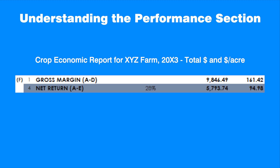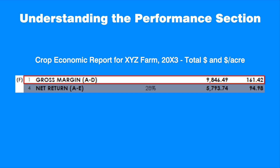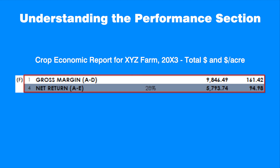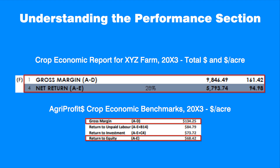Let's look at the resulting crop economic efficiency measures. This field provides a gross margin of $161.42 per acre return once all cash costs are paid. This amount is available to cover depreciation costs, principal payments and owners withdrawals. The net return of $94.98 is the profit remaining after payment of all costs and can be used for future investments and owners withdrawals. Knowing the gross margin and net return information, the farm manager can use this to evaluate and negotiate a fair market rent with a landlord. Comparing with the AgriProfits crop benchmarks shows this producer is above the benchmarks by 20% and 39% for gross margin and net return respectively.